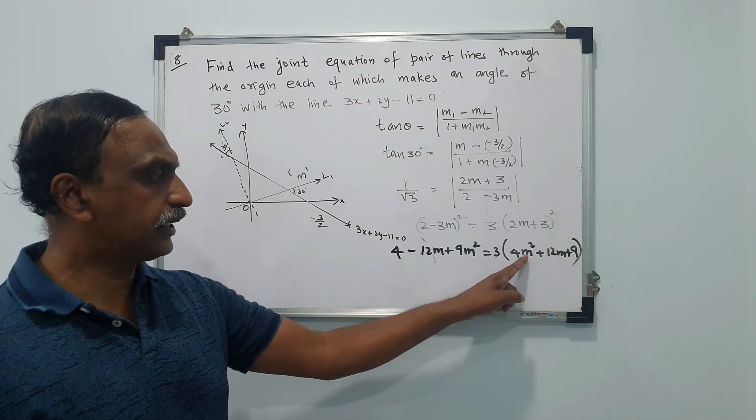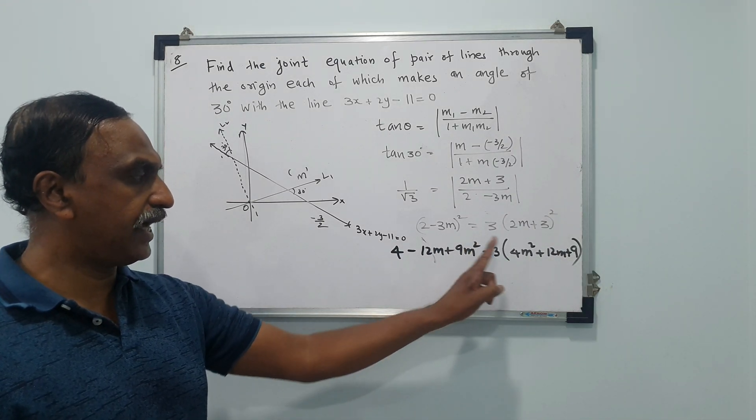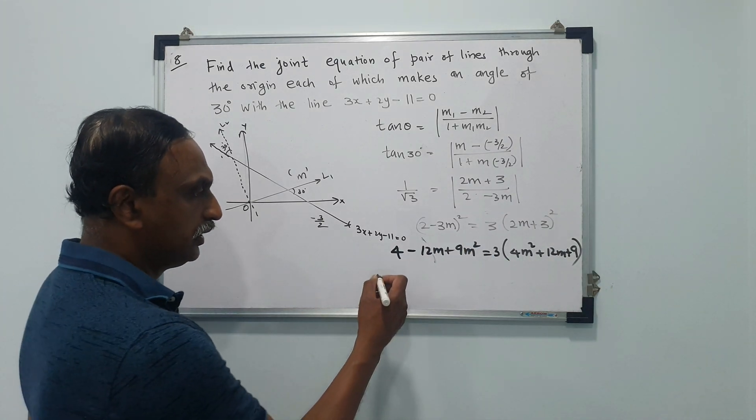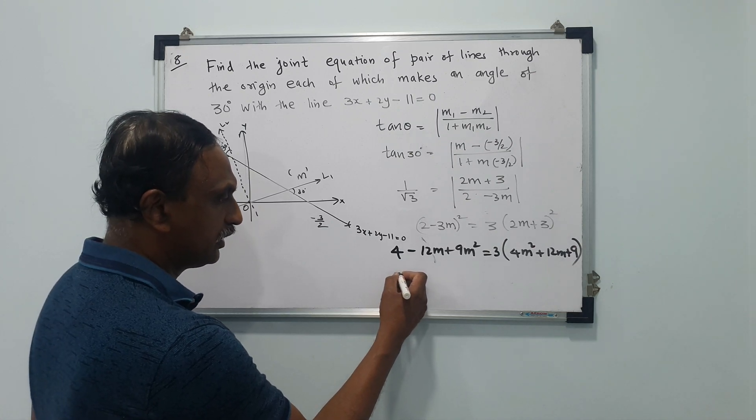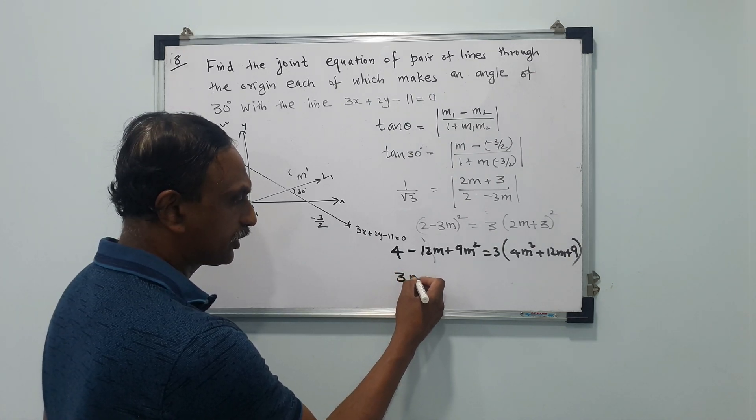Rearranging: 9M² - 12M² gives -3M², and combining the M terms gives 36M. Simplifying to find the equation relating M.